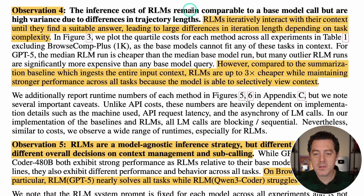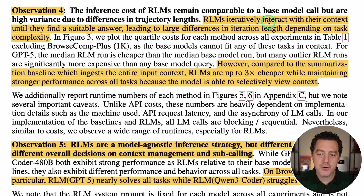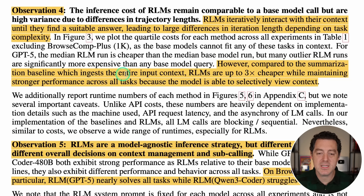Observation four: inference cost of RLMs remains comparable to a base model call — but this is high variance due to differences in trajectory lengths. If the system goes really deep recursively, it's more expensive with spikes in cost. RLMs iteratively interact with their context until they find a suitable answer, leading to large differences in iteration length depending on task complexity. However, compared to the summarization baseline which ingests the entire input context, RLMs are up to three times cheaper while maintaining stronger performance because the model selectively views context.